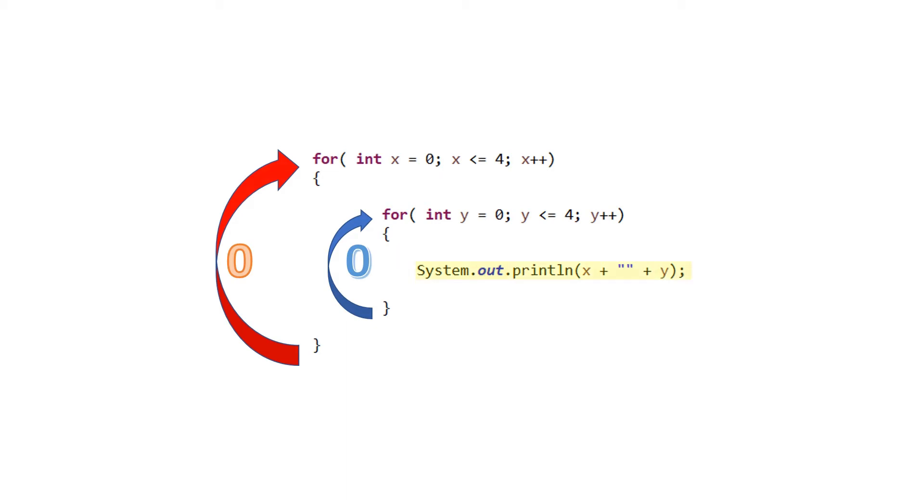Here we have a simple system.out.println statement in which the values of x and y are displayed. These two values are connected or concatenated and displayed in the output console. Having completed a cycle of the inner loop, the value of y is incremented by 1.